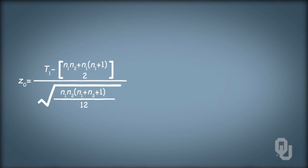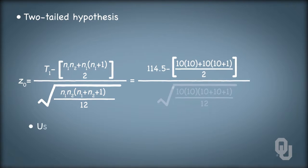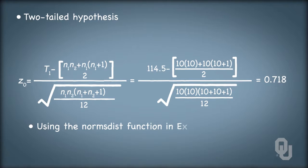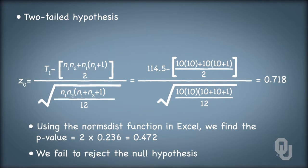Say for our Duff Brewery example, we want to answer a two-tailed hypothesis. We just want to know if the two design distributions are different from each other. The test statistic is 0.718. Using the norm S dysfunction in Excel, and with a little manipulation, we get that the p-value is 2 times 0.236, which is 0.472. That's a very large p-value, much larger than any alpha we'd ever choose.